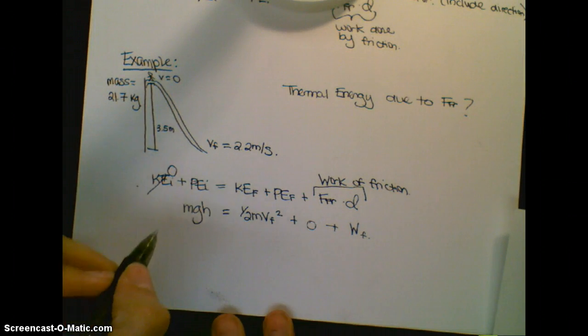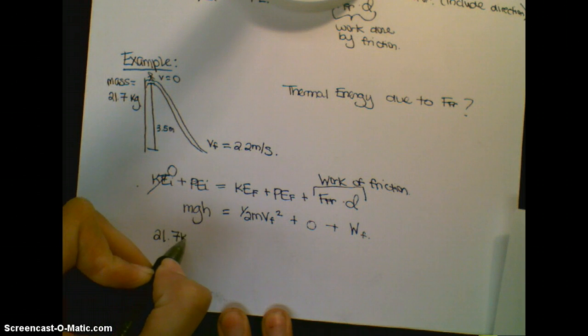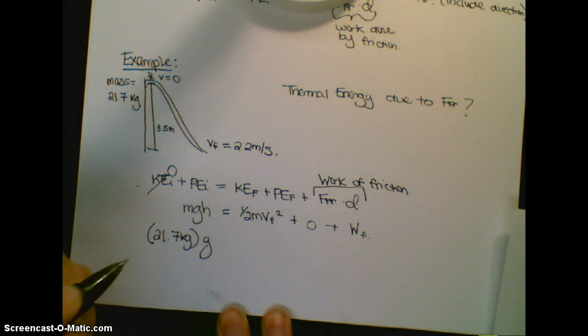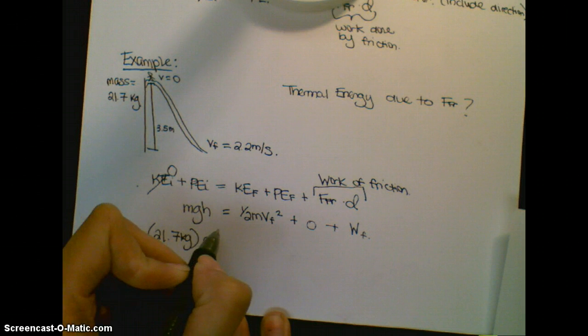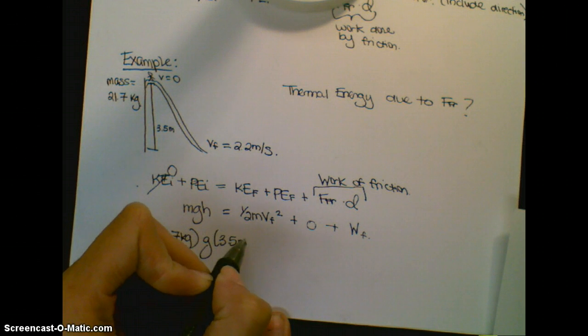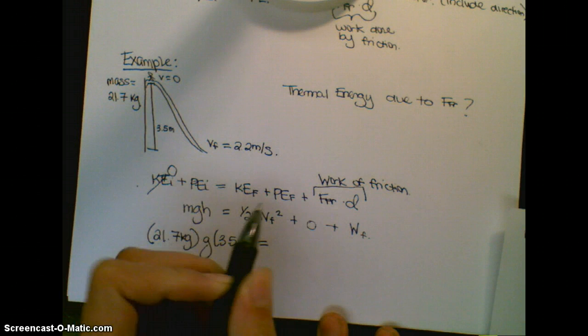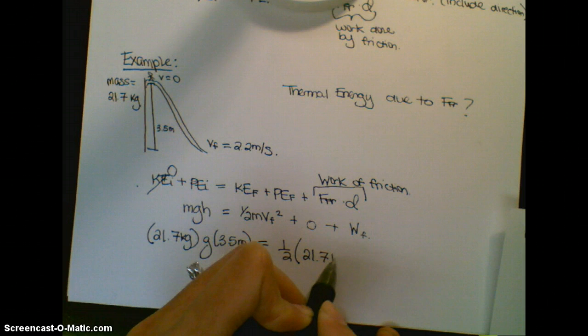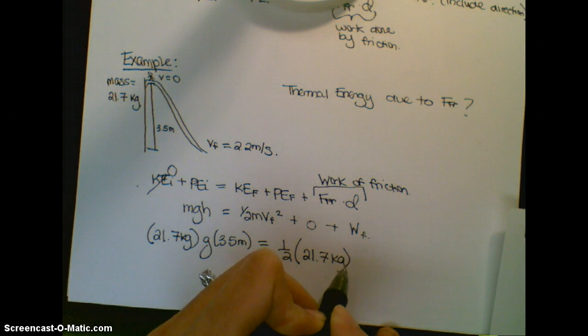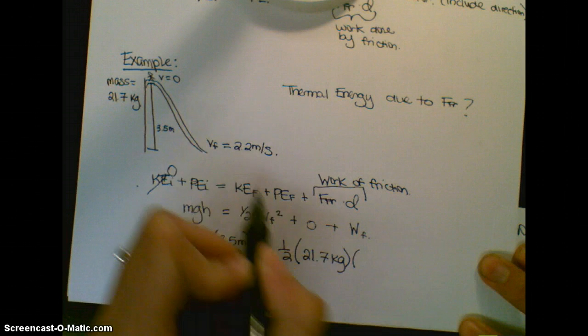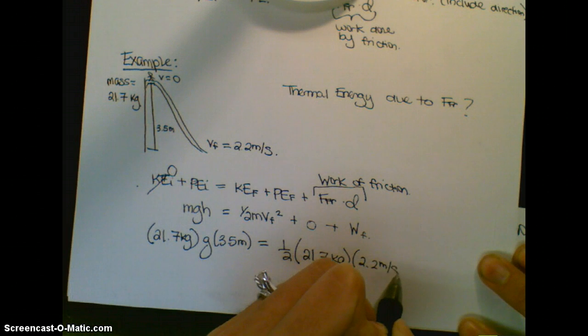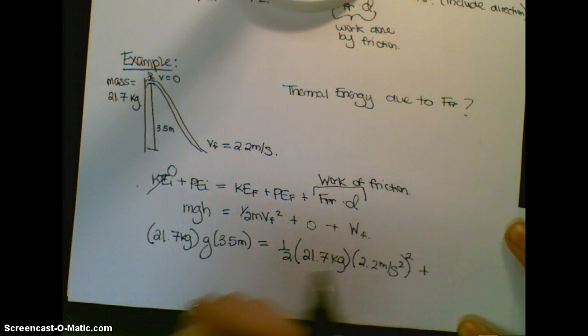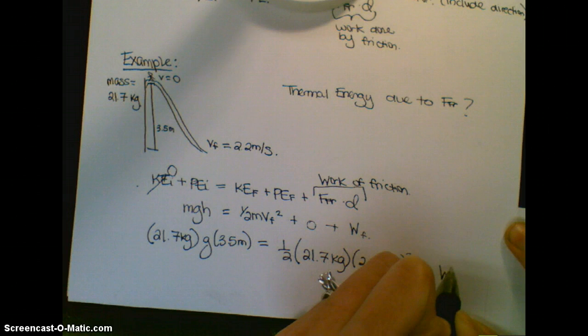So we know that the mass is 21.7 kilograms. I'm going to just say G. Everybody knows that G is 9.8 meters per second squared. My height is 3.5 meters. I set this equal to one-half m, which is 21.7 kilograms. V, which is given to me, it's 2.2 meters per second. I forgot my squared. And I add the work done by friction.